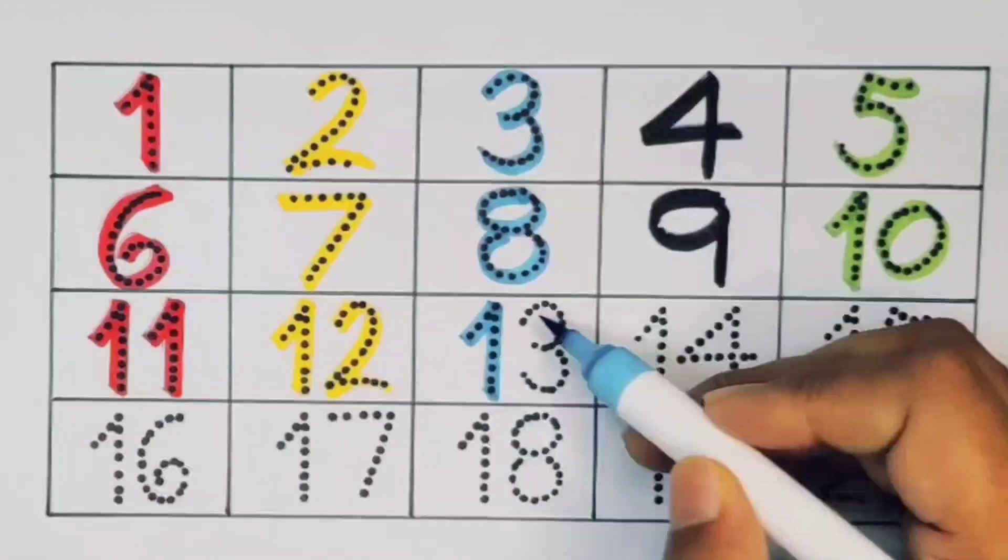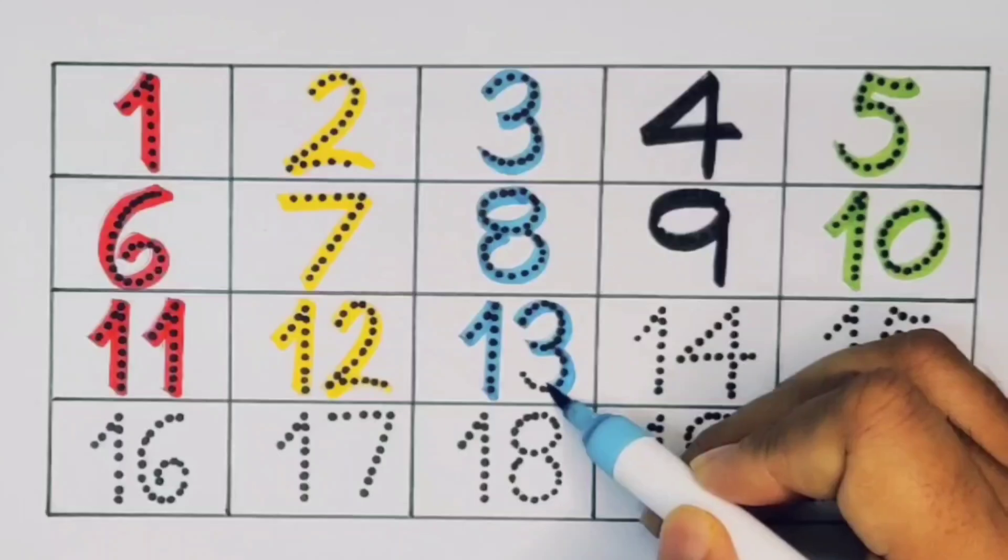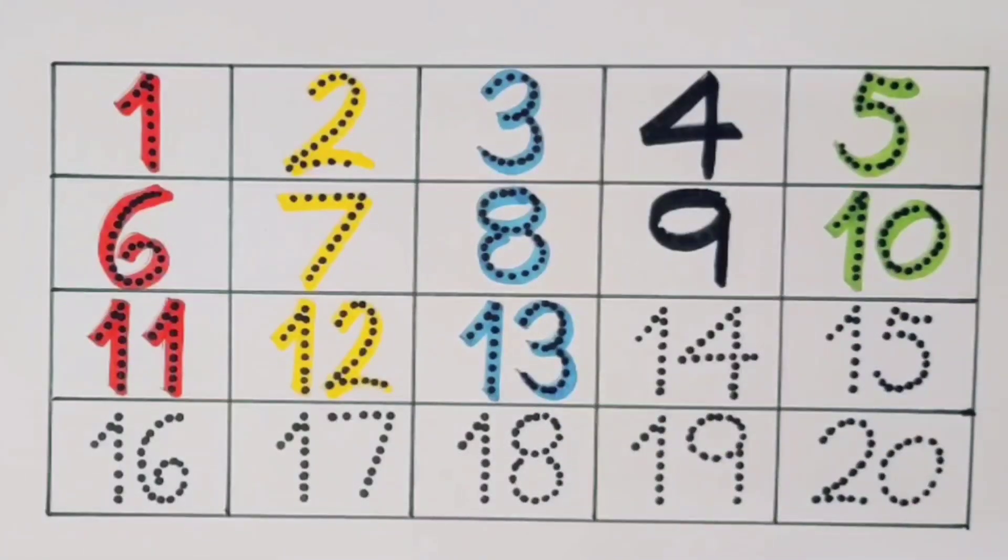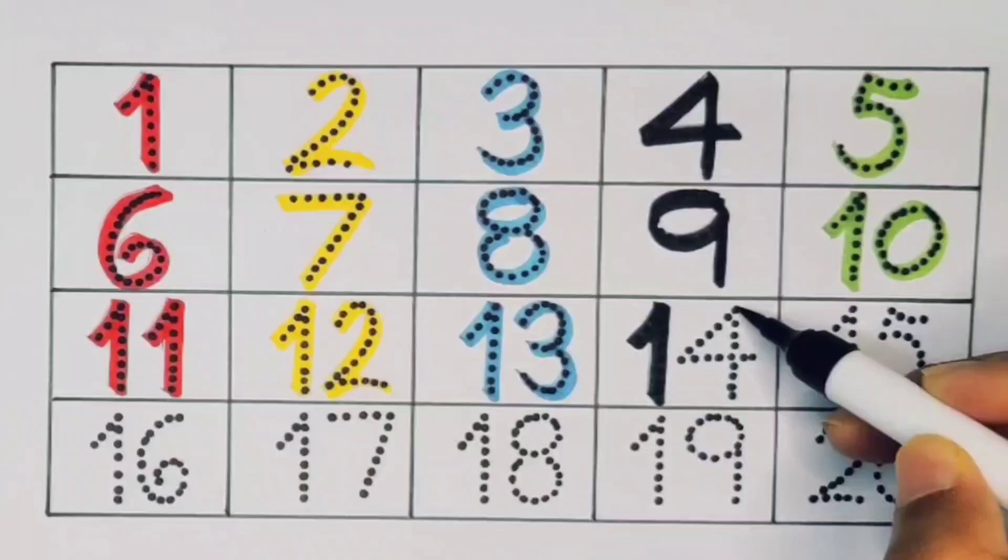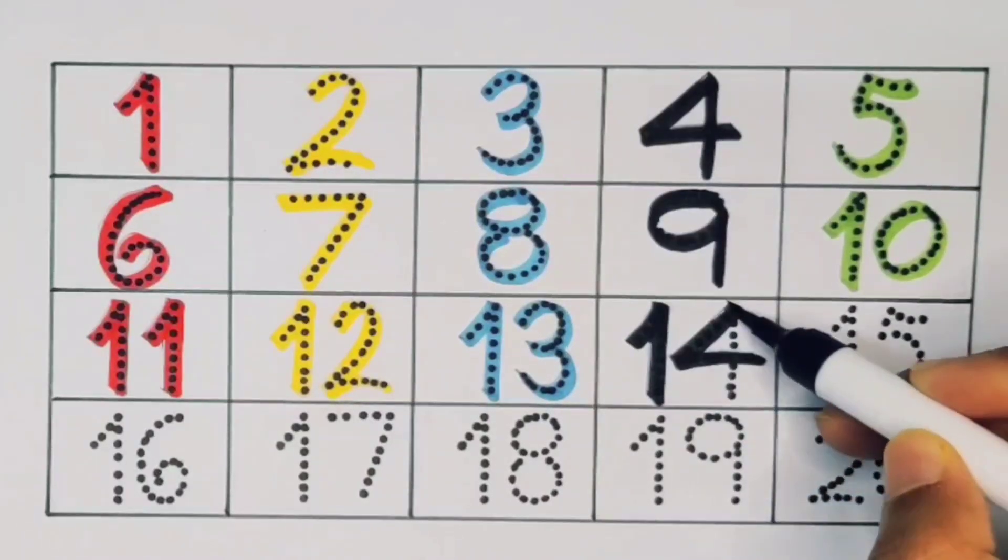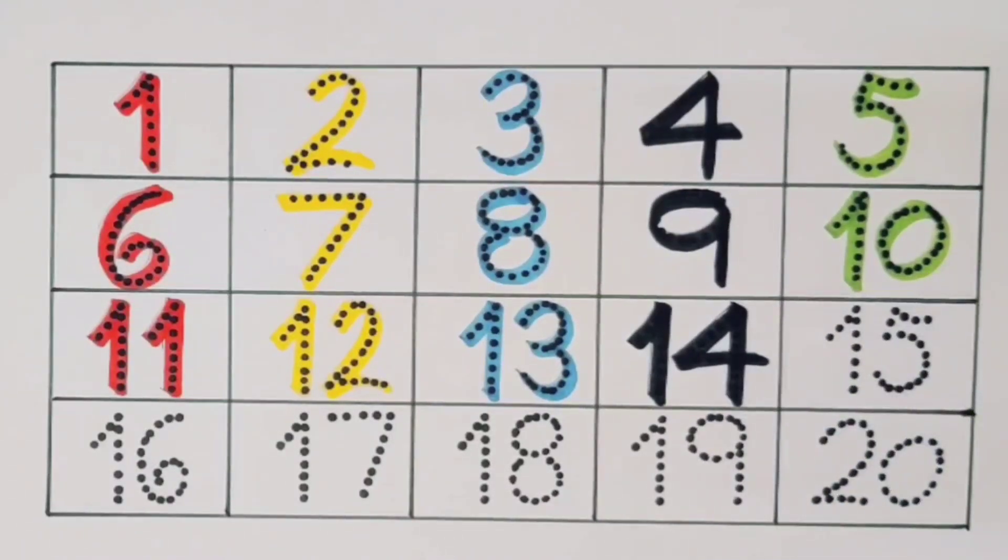Next kids, fourteen. One four, fourteen. Number fourteen. Next kids, fifteen. One five, fifteen. Number fifteen.